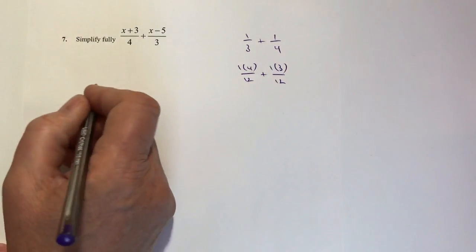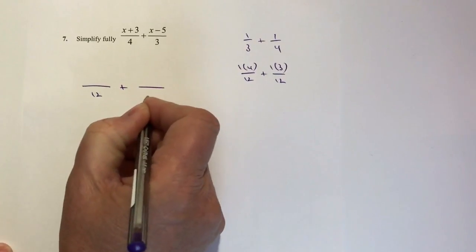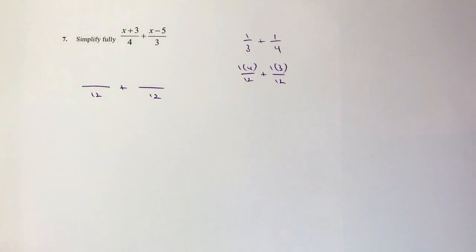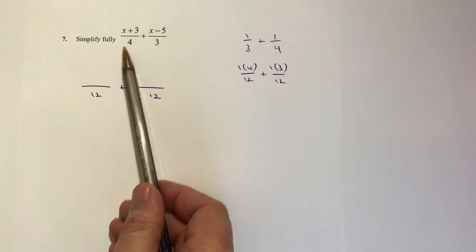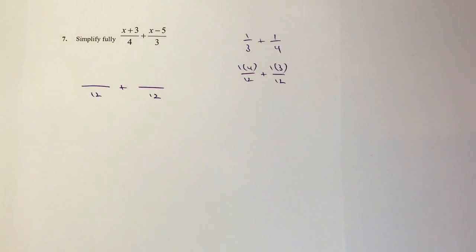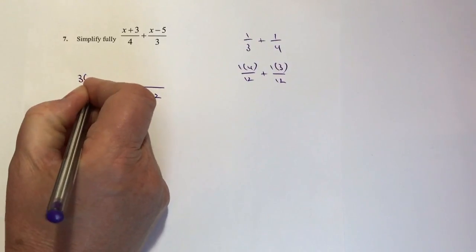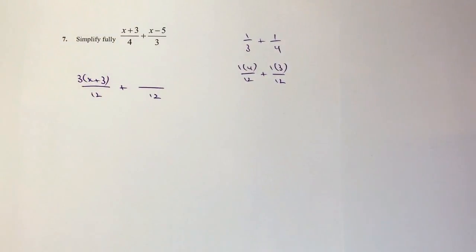So I'm going to make both denominators to be 12. If I look at the first fraction, what have I multiplied the 4 by to get to 12? Well, that's going to be 3. So I need to multiply the numerator by 3 as well.